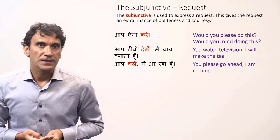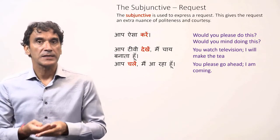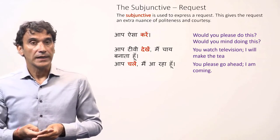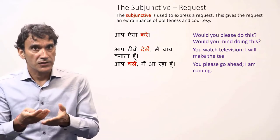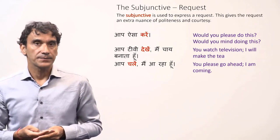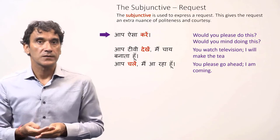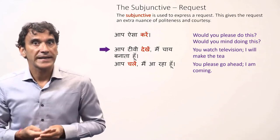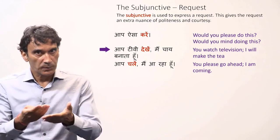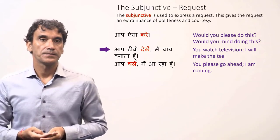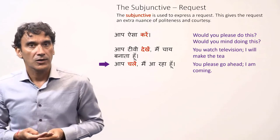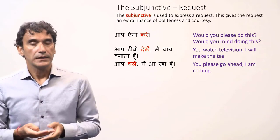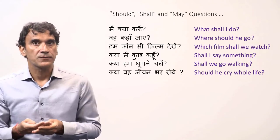The subjunctive can be used in place of the imperative to express a request, giving the request an extra nuance of politeness and courtesy. For example: aap aisa karein — would you please do this, would you mind doing this. Aap TV dekhain, main chaye banata hoon — you please watch television, I will make tea. Aap chalein, main aa raha hoon — you please go ahead, I am coming. The subjunctive can also be used to make certain types of questions.